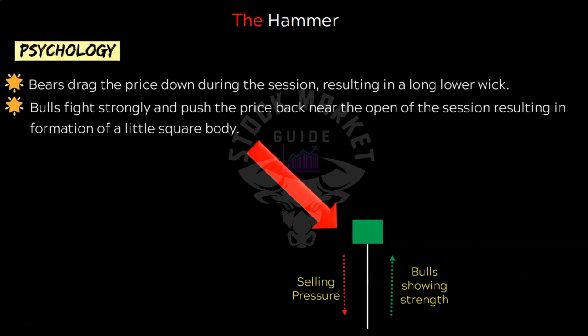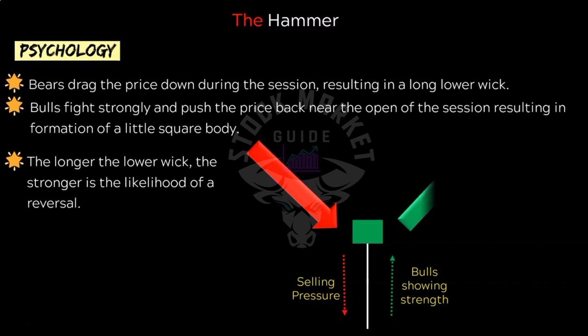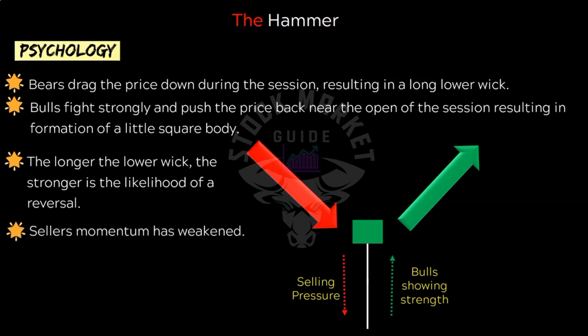This formation shows that the sellers' momentum has weakened and sellers were not able to push prices lower. If the next day the bulls hold their position, we can say that the reversal is real and a trading position can be taken. Note that the psychology and formation of hammer is similar to the dragonfly doji, since here also the long lower wick results in a likely reversal. However, the hammer forms a real body but the dragonfly is expected to have little or negligible distance between open and close. Thus the dragonfly doji is in fact a stronger indicator of reversal than the hammer, though the distinction is very minute between these two.